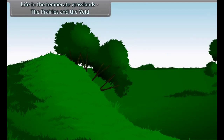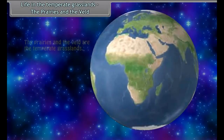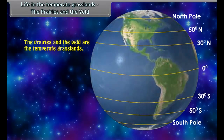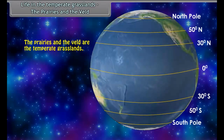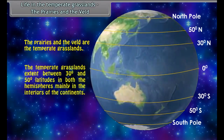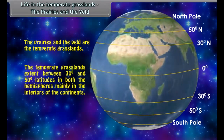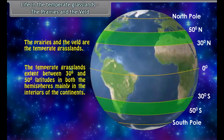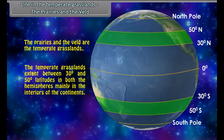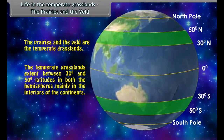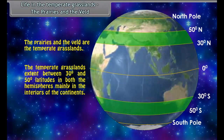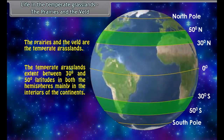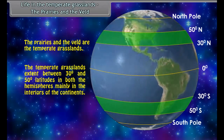Life in the Temperate Grasslands: The Prairies and the Veld. The Temperate Grasslands extend between 30 degrees and 50 degree latitudes in both the hemispheres, mainly in the interiors of the continents.